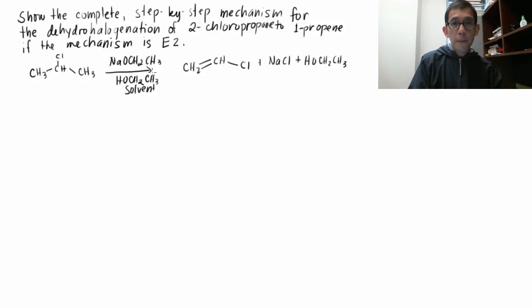In dehydration of an alcohol, you need an acid. In dehydrohalogenation, you need a strong base. The strong base in this example is sodium ethoxide. Sodium ethoxide in solvent dissociates into Na+ plus OCH2CH3, and you have a negative charge on the oxygen.